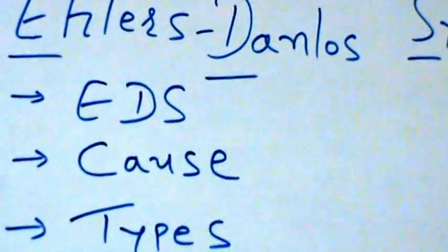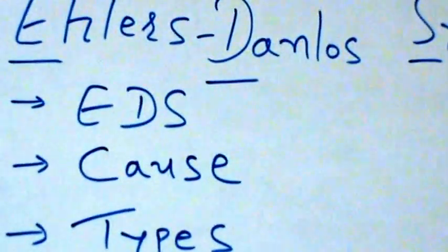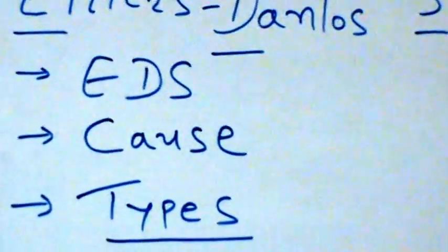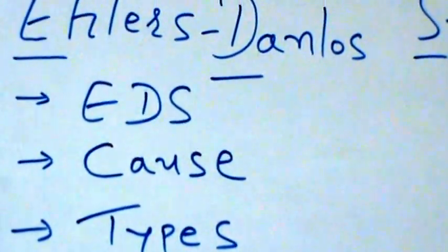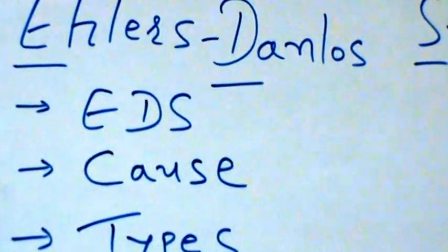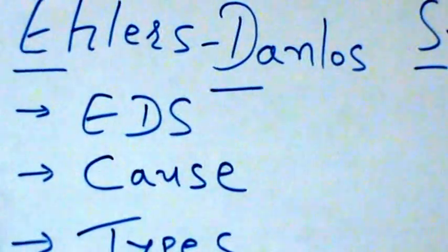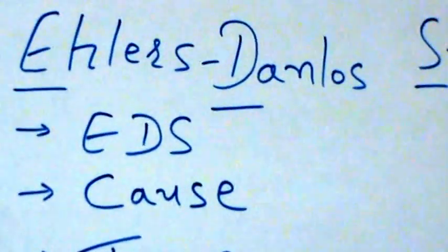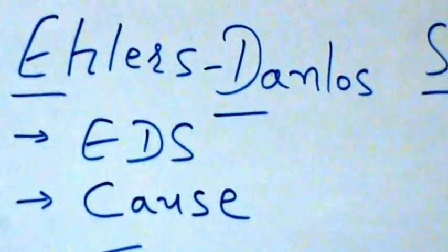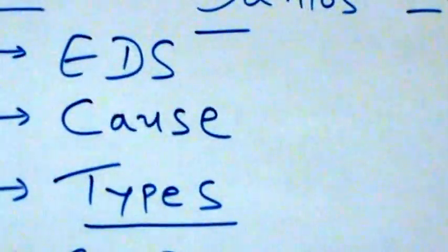Unlike Marfan syndrome, the fragile tissues, skin, and unstable joints found in EDS are due to defects in a group of proteins called collagen — proteins that add strength and elasticity to connective tissue. So what are the major types?